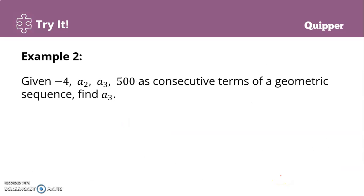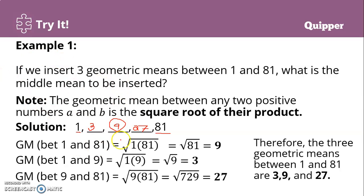Another example: given negative 4, a sub 2, a sub 3, 500 as consecutive terms of a geometric sequence, find a sub 3. We are looking for the third term, which is one of the two geometric means between negative 4 and 500. Note that the previous method is only good for an odd number of geometric means.